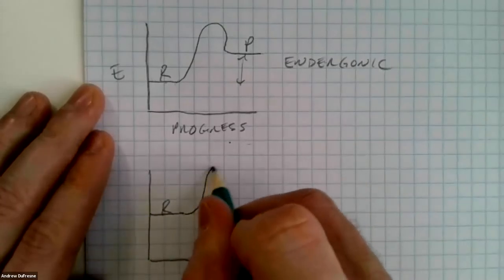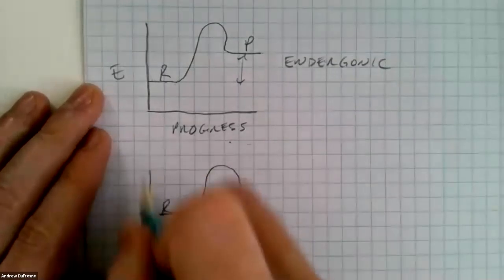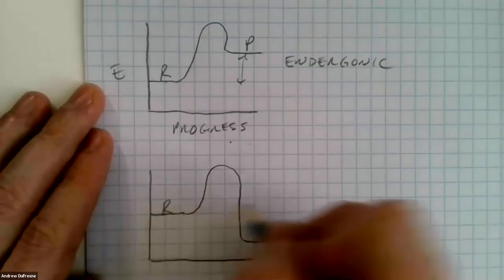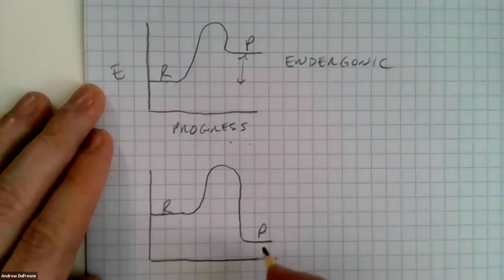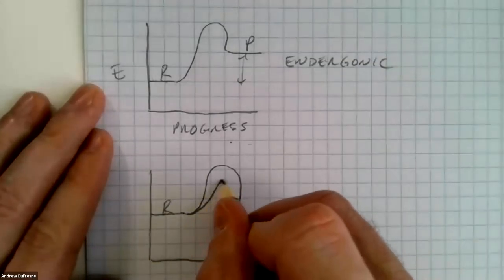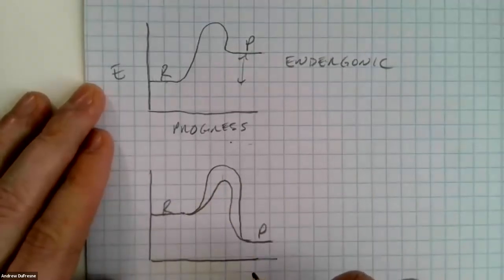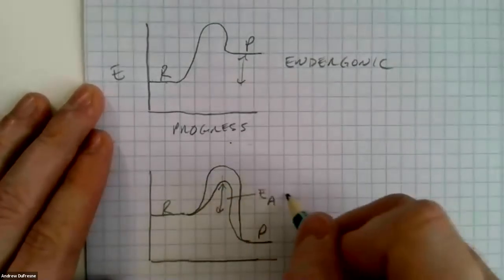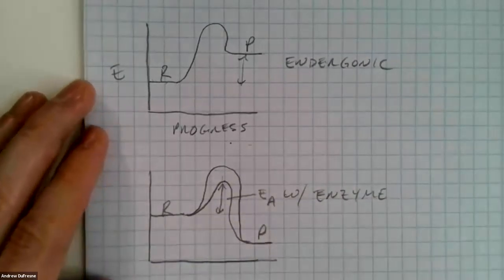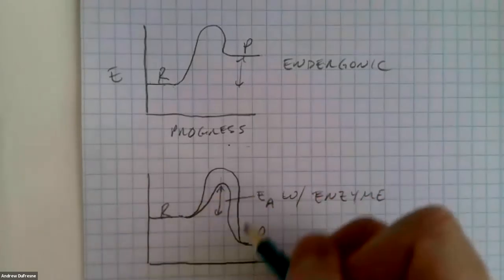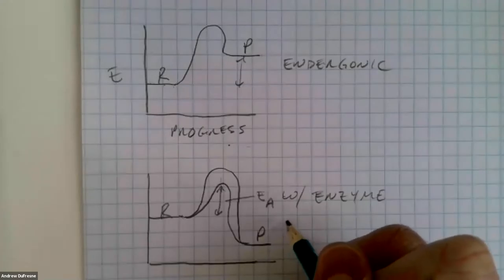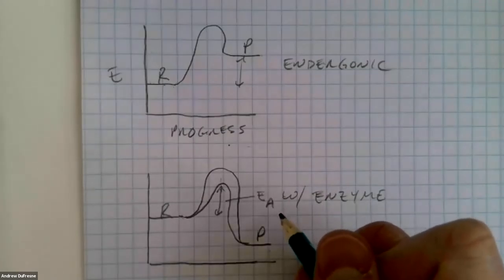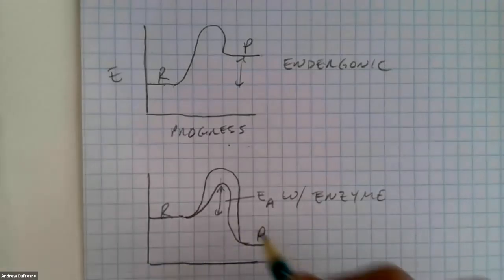I want to give you this visual to consider. So my reactants are here — typically they need that much activation energy to get down to products. Without an enzyme present, this reaction can happen. With an enzyme present — the major player today — what we actually see is a decrease in that activation energy, or energy of activation. So that is how enzymes are helping things along: they're lowering the investment we have to put in in order to make the reaction happen. Keep that in mind.